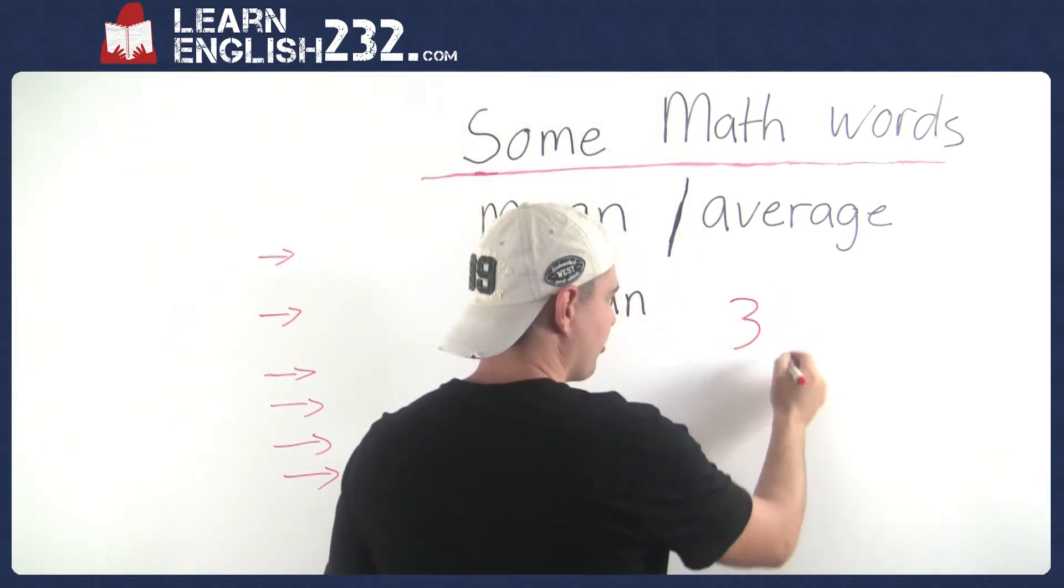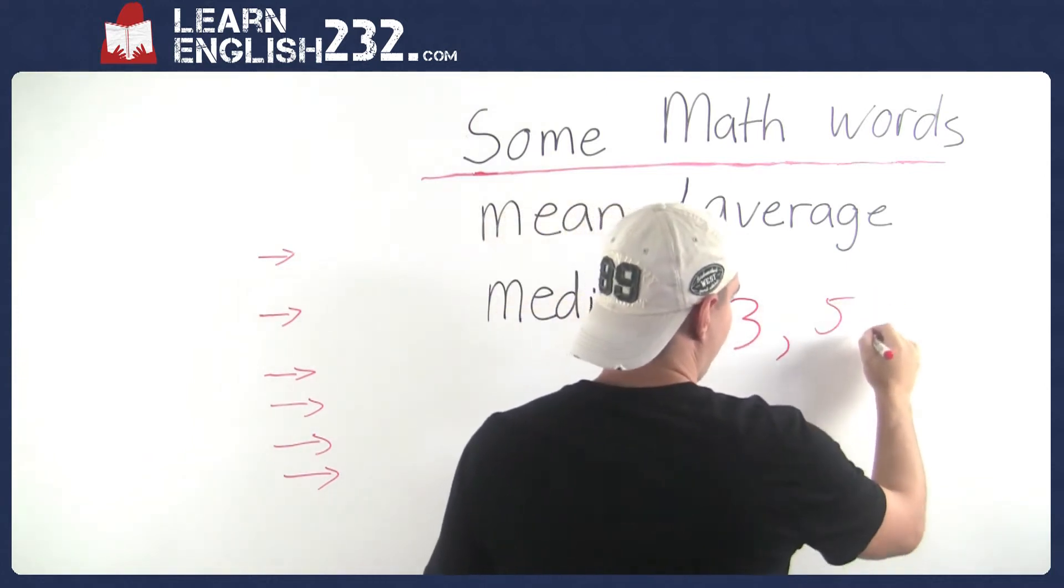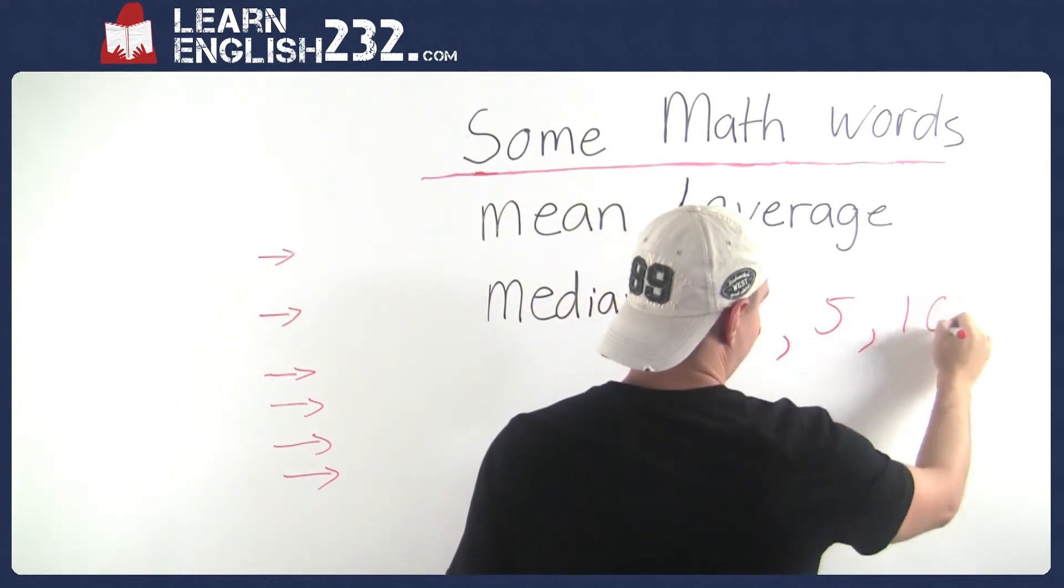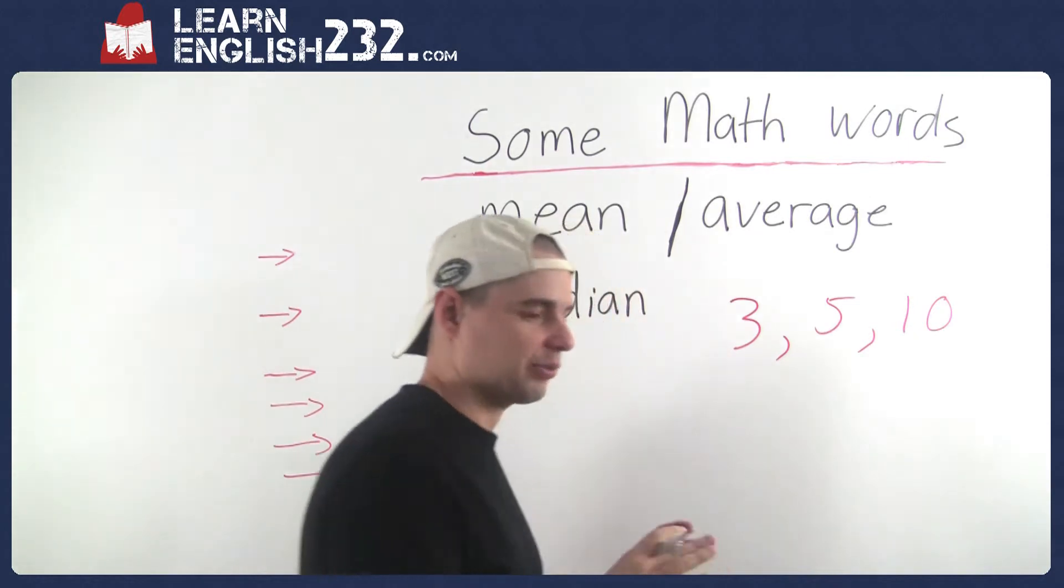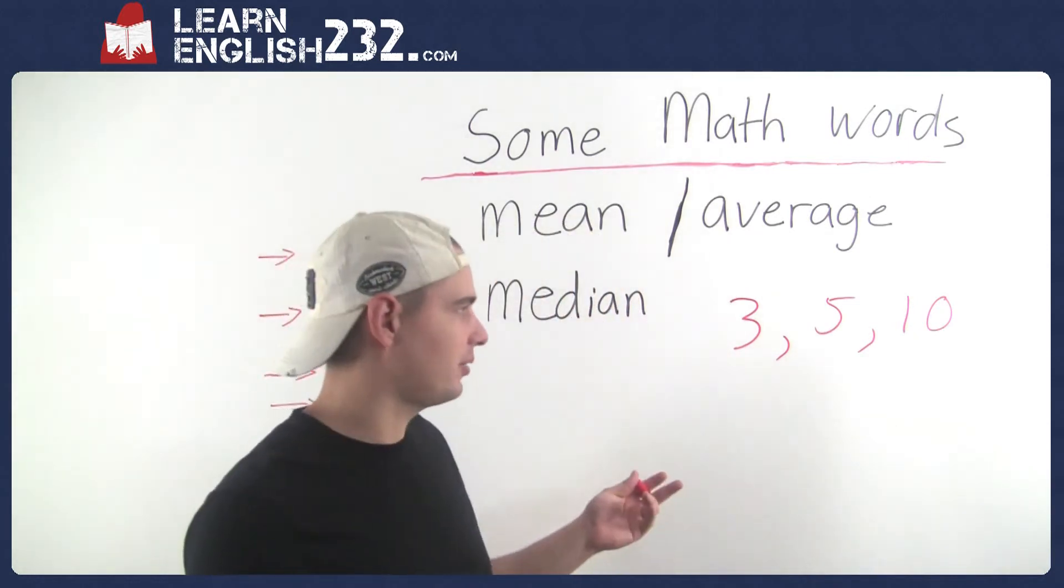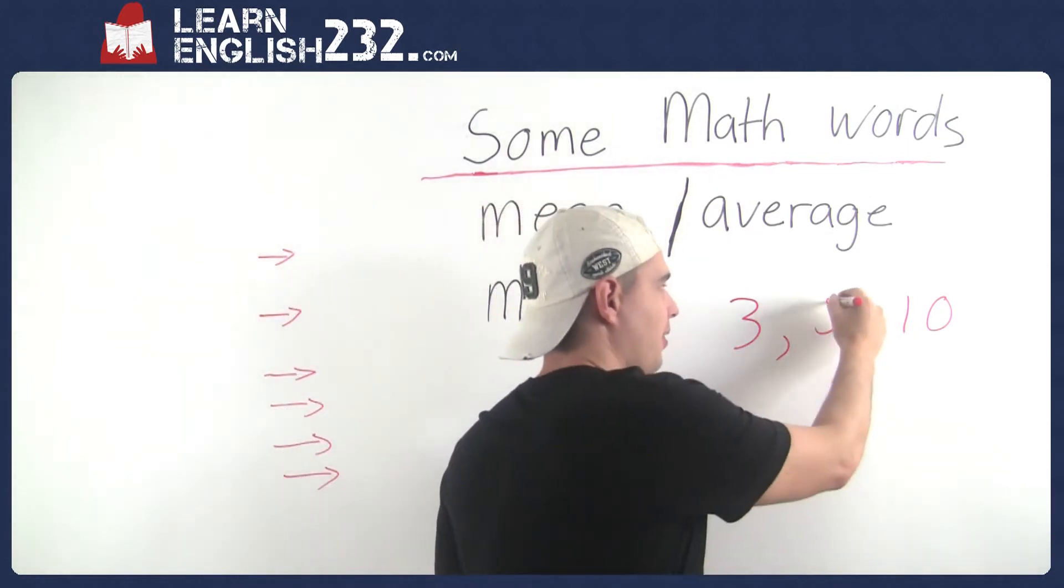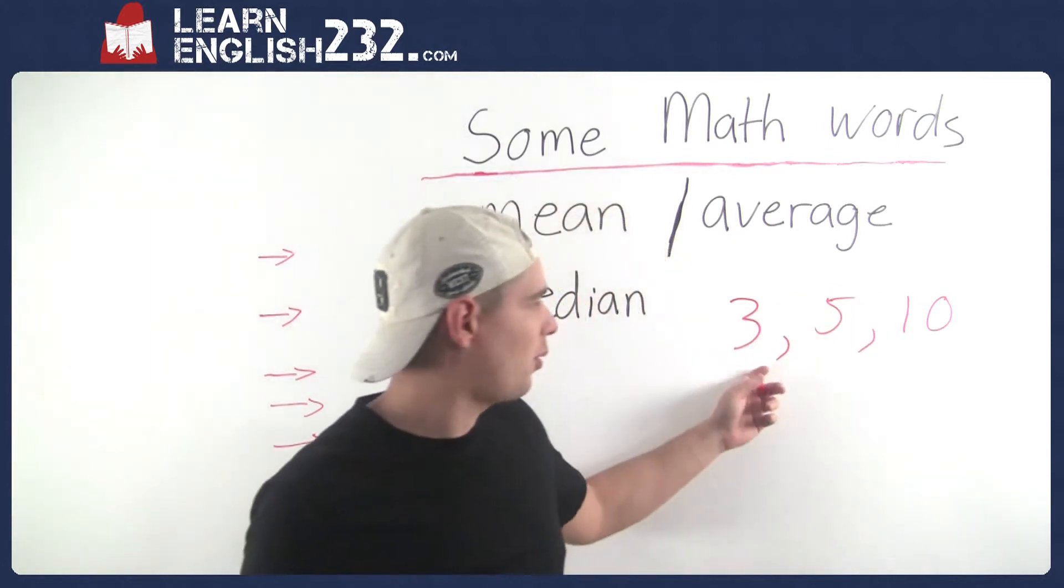Alright, I got three, five, and ten. For whatever reason, let's say this is the number of points that some guy scored in a basketball game. So first game he sucked, had three points. Second game he still didn't do that great, had five.